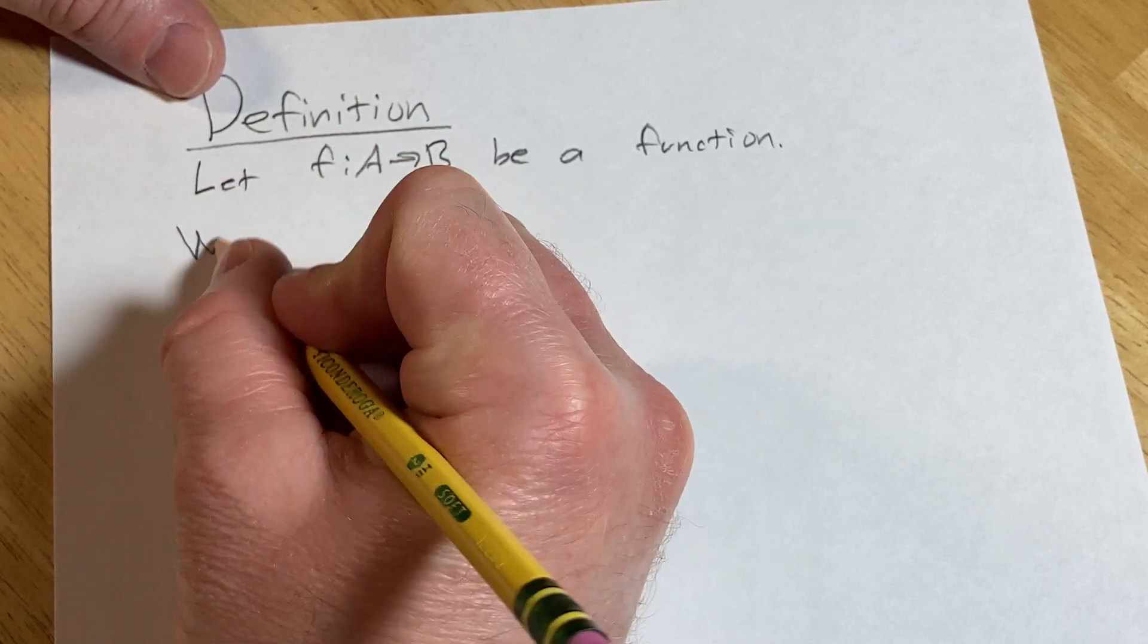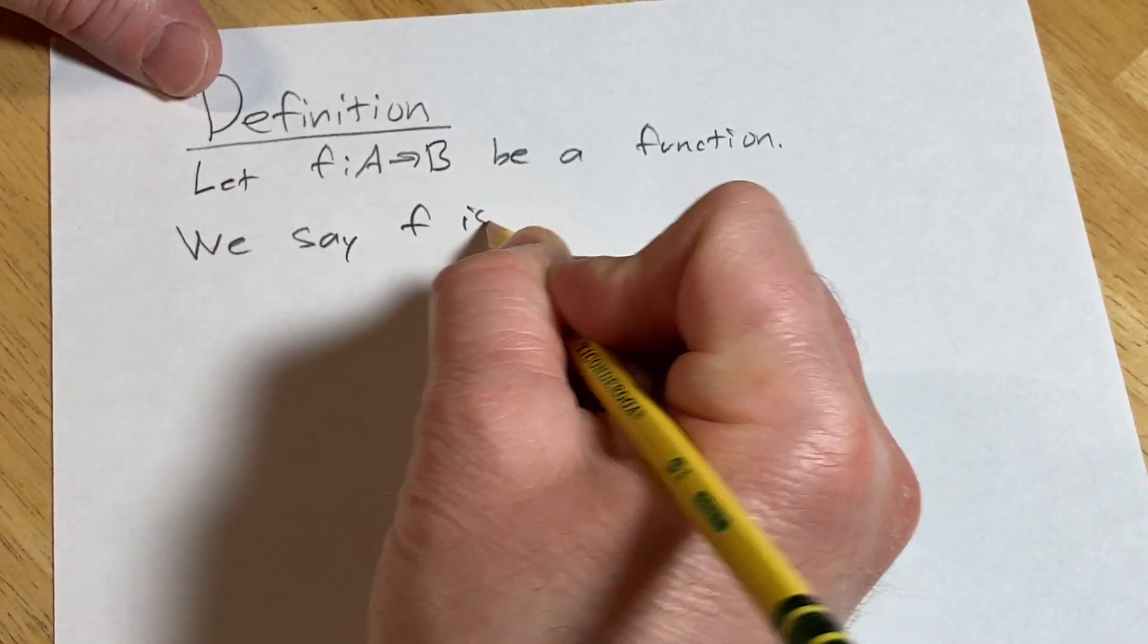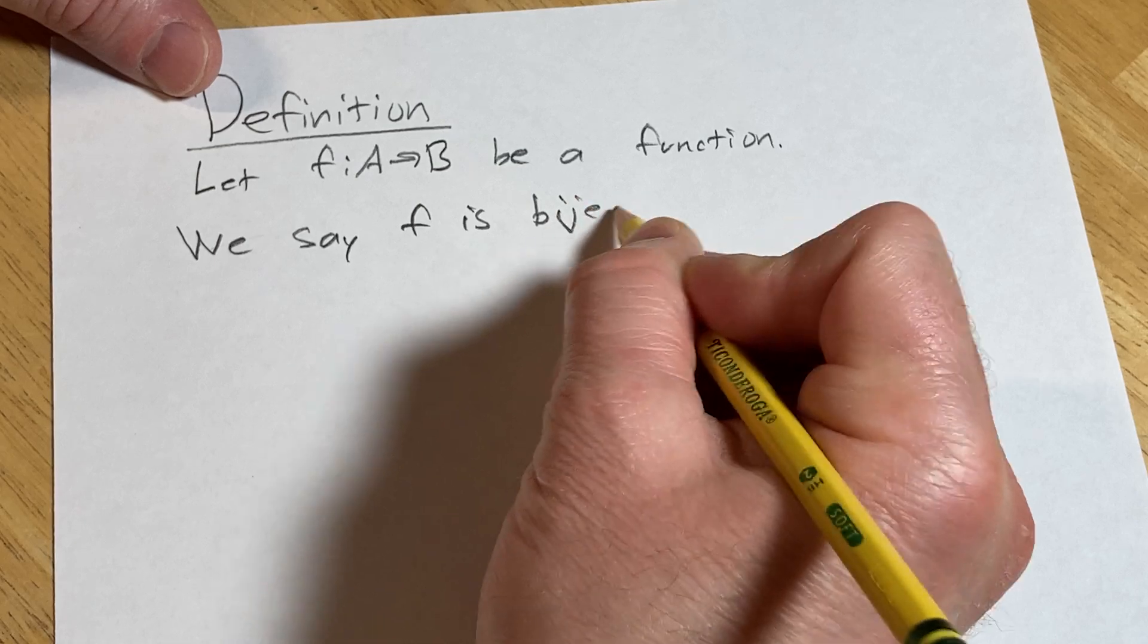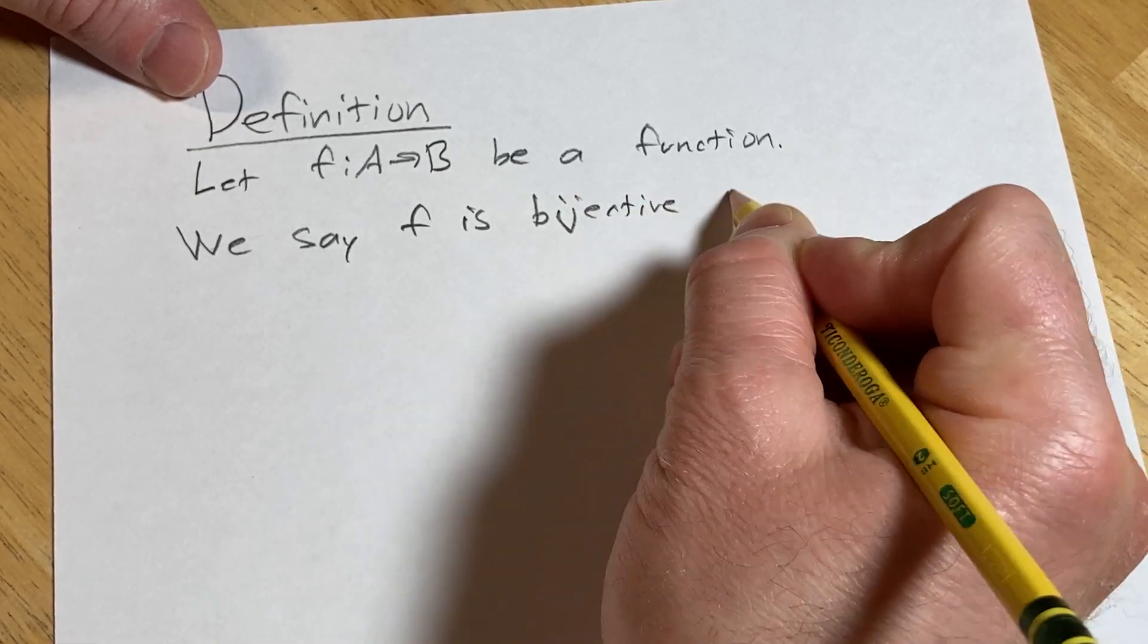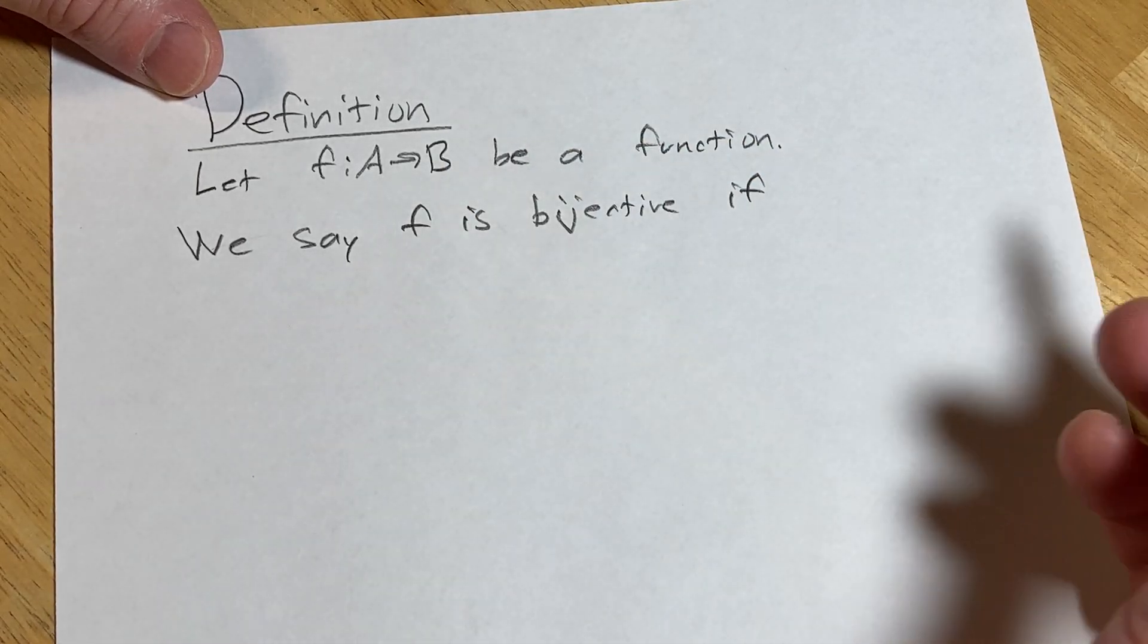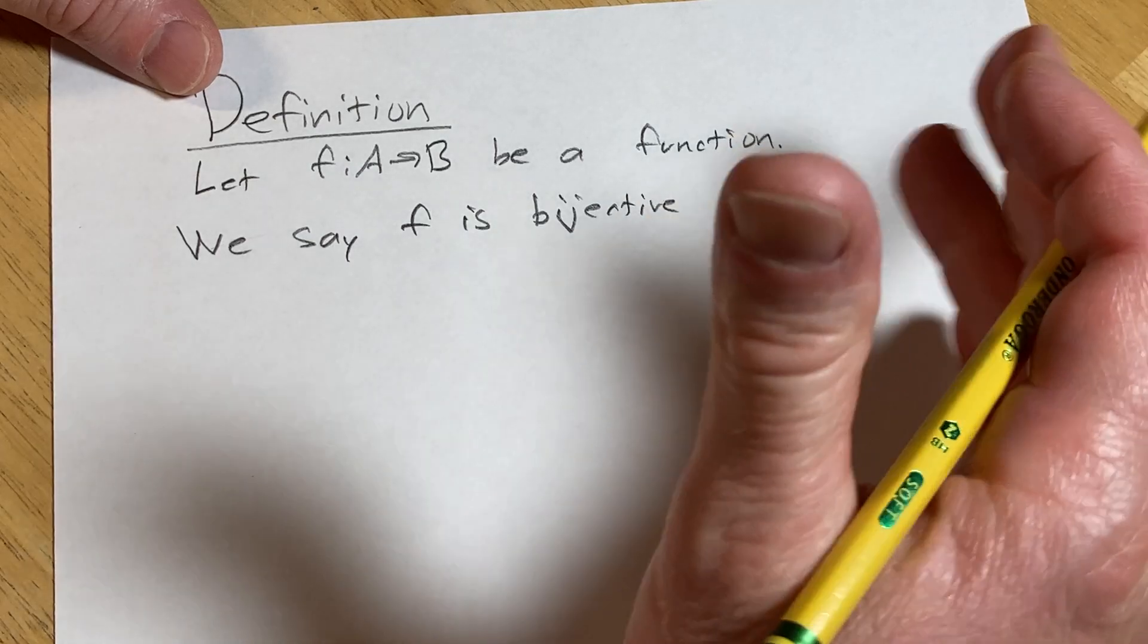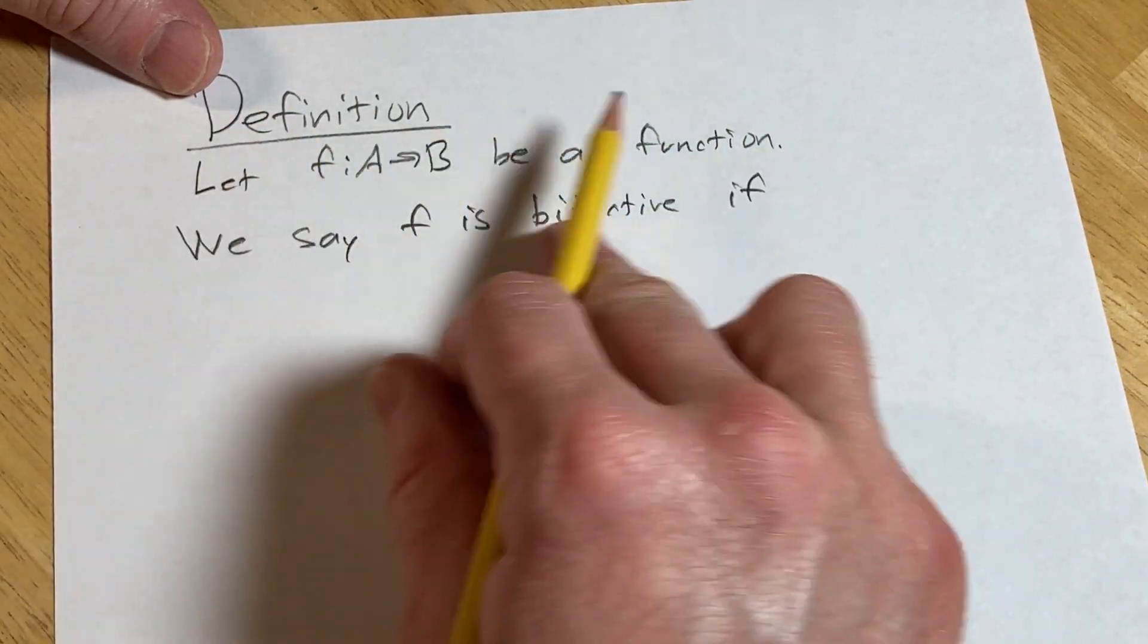We say f is bijective, just to save time, because I don't want to just say it's bijective if it's one-to-one and onto. Let me show you what that means.